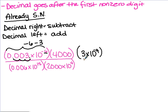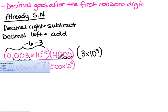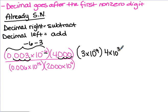We subtracted 3 because we moved it 3 places from the exponent negative 6. So we have negative 6 minus 3, which gives us our new exponent of negative 9. So we now have 3 times 10 to the negative 9th. Now for 4,000: our decimal is after the last 0. In scientific notation, it needs to be after the 4, so that was 1, 2, 3 places to the left.